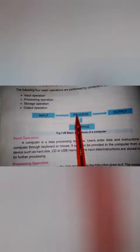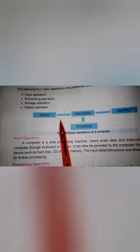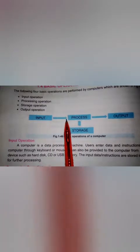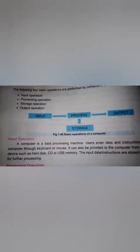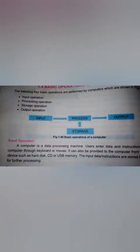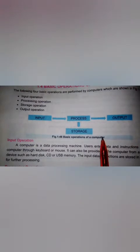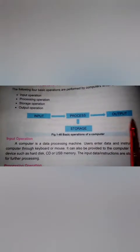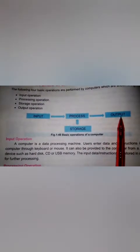If we want to make a multiplication, total, student average, or list, then we can perform a process. After processing, the data is stored in the computer. After storing the data, when we want to perform tasks, we can show the result through the output operation.